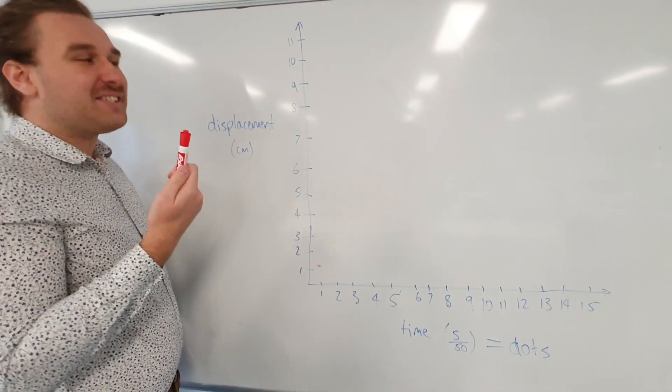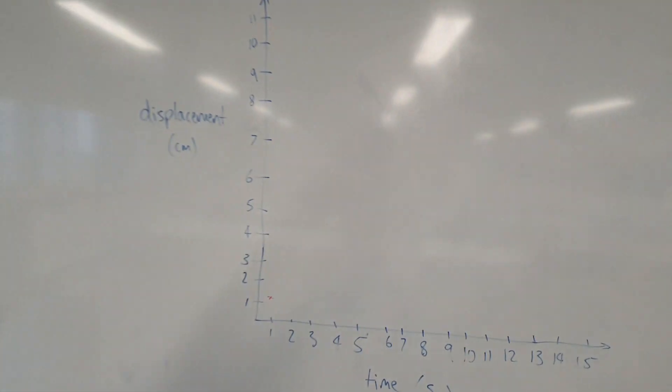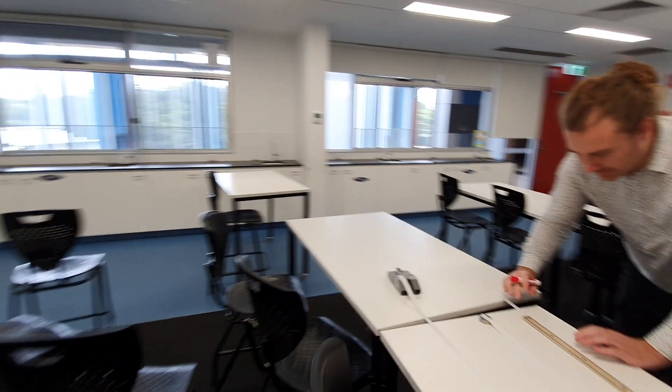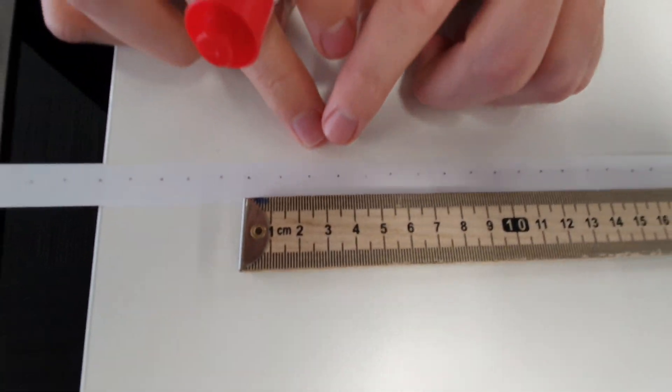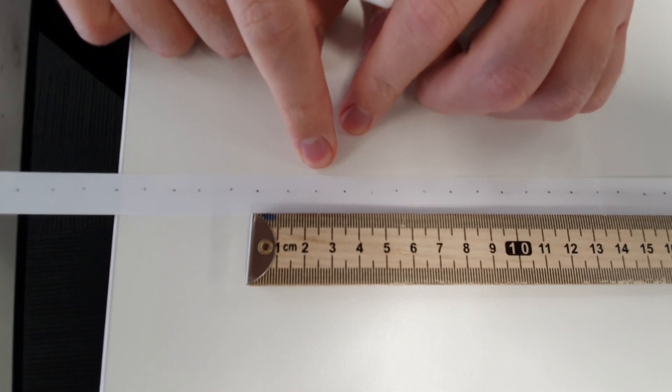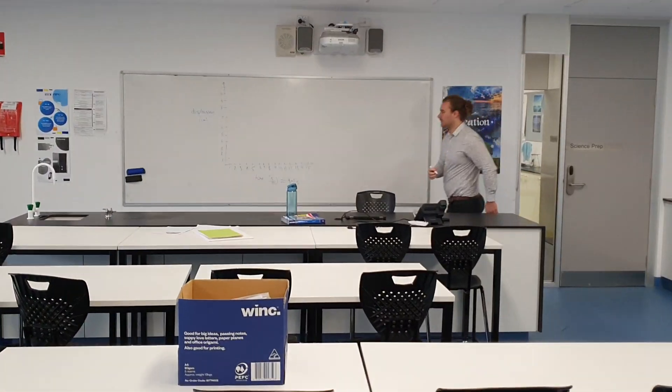Alright, now what we need to do - and I should have organized this better - is I need to go back all the way to the back of the classroom. Now I look at my second dot and my second dot is at 2.3 centimeters, or 2.4 centimeters, I'll call it. So what I'm going to do is I'm going to go to, on my graph, dot number two is at 2.4 centimeters.